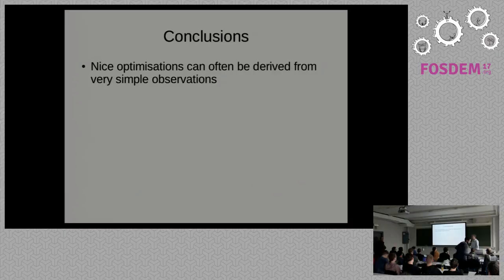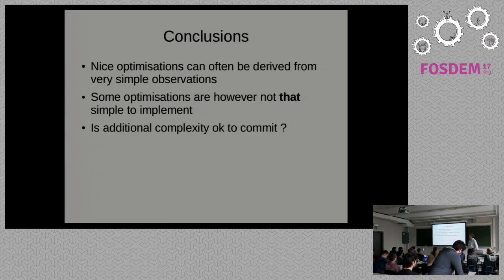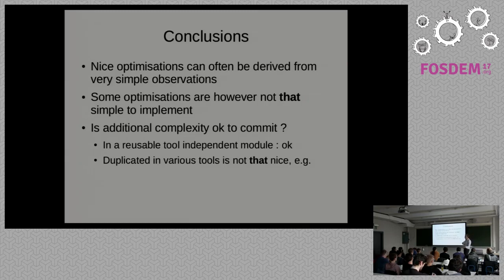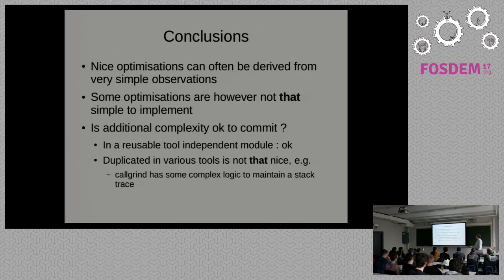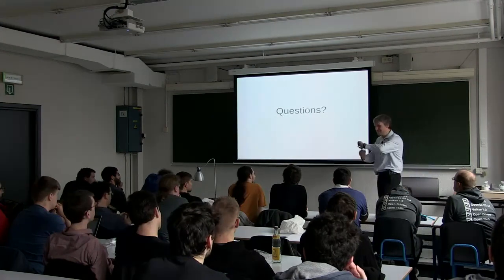Conclusion: nice optimizations can often be derived from very simple observations, both for the Massif X-tree and for Helgrind. Some optimizations are not that simple, as seen with Helgrind. Is it okay to add this complexity? For Massif it was yes — additional complexity but usable by all tools, so a clear benefit. If we have additional complexity in a tool-reusable module, that's good. But when we have various bits of logic in Helgrind and Callgrind doing more or less the same thing, it's not clear that duplicating it is the right approach. We should discuss it more.